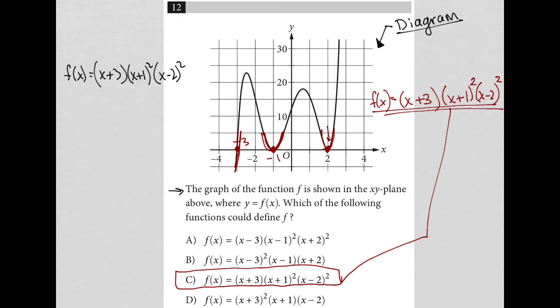The x-intercepts are where y is 0, or where f of x is equal to 0, which means if I were looking for the x-intercept of this graph, I would say, well, 0 equals x plus 3, x plus 1 squared, and x minus 2 squared. Whatever my x values are that allow this equation to be true, where it's all equal to 0, those are where my x-intercepts are. And the way that I would solve that is by setting each of these binomials individually equal to 0.